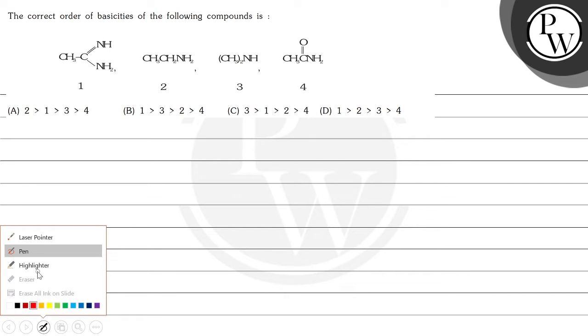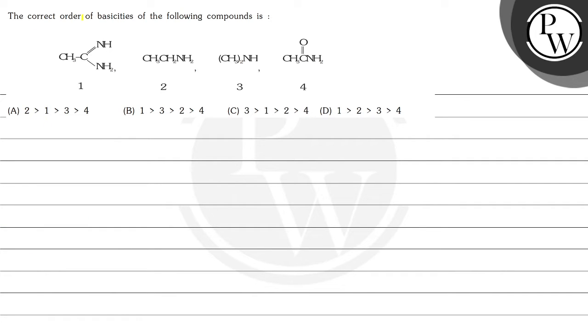Hello, Bacho. Let's read this question. Question says, the correct order of basicities of the following compound is here. These are the four compounds are given and the options are 2 is greater than 1 is greater than 3 is greater than 4. 1 is greater than 3rd is greater than 2nd is greater than 4th. 3rd is greater than 1st is greater than 2nd is greater than 4th and 1st is greater than 2nd is greater than 3rd is greater than 4th.